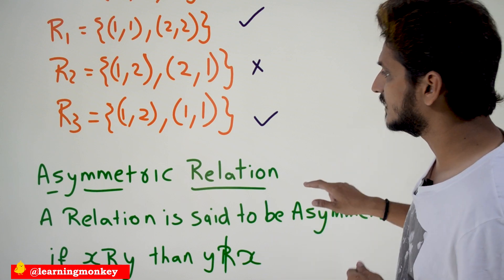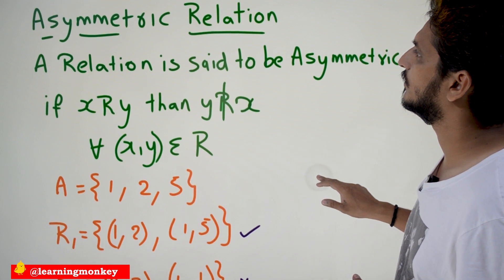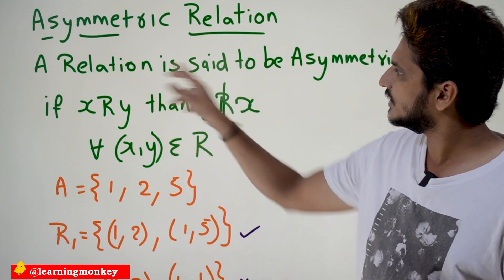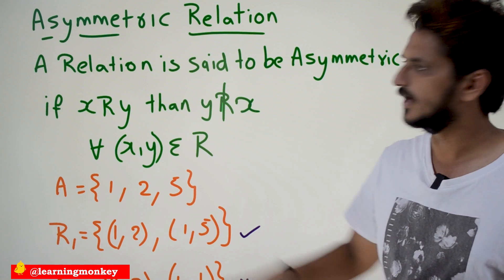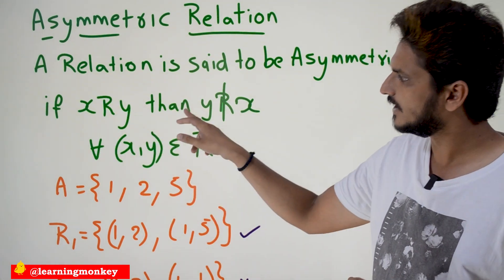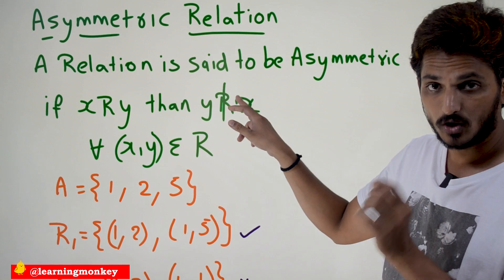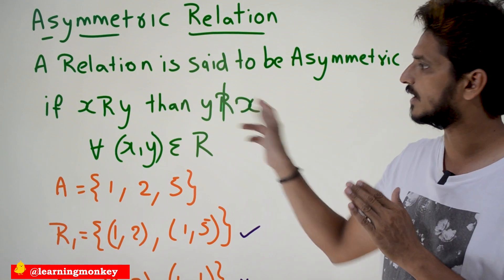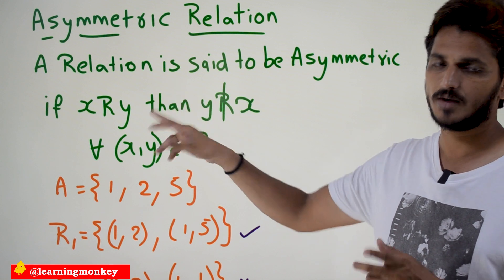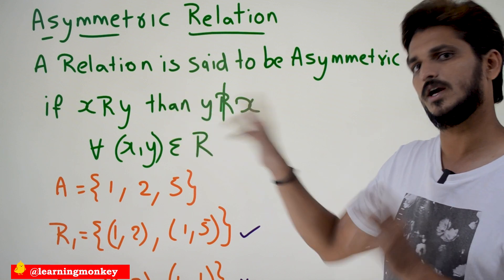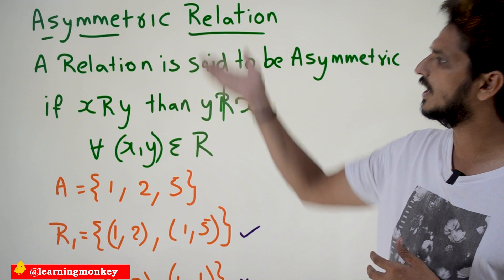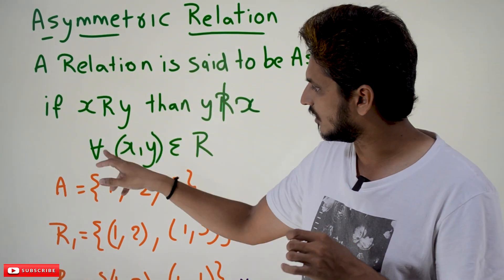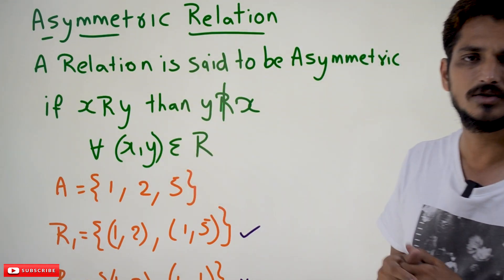Now coming to the next property: asymmetric relation. A relation is said to be asymmetric if x relates y, then y should not be related to x — meaning you should not have the pair (y, x). If (x, y) is there, you should not have (y, x). That is the meaning of asymmetric relation. This should be checked for all x, y belonging to the relation.